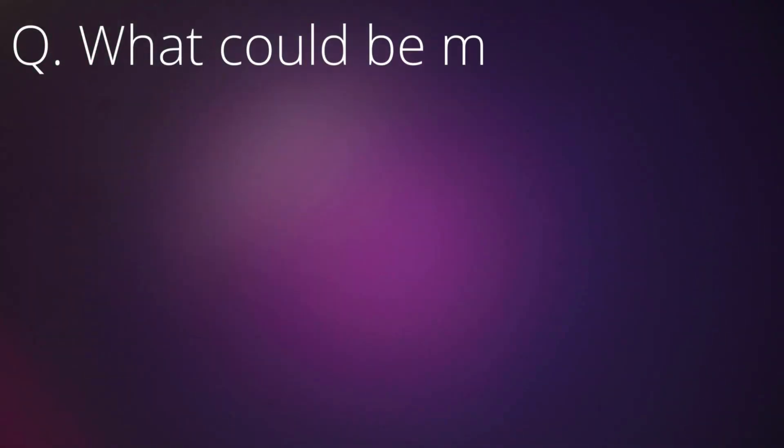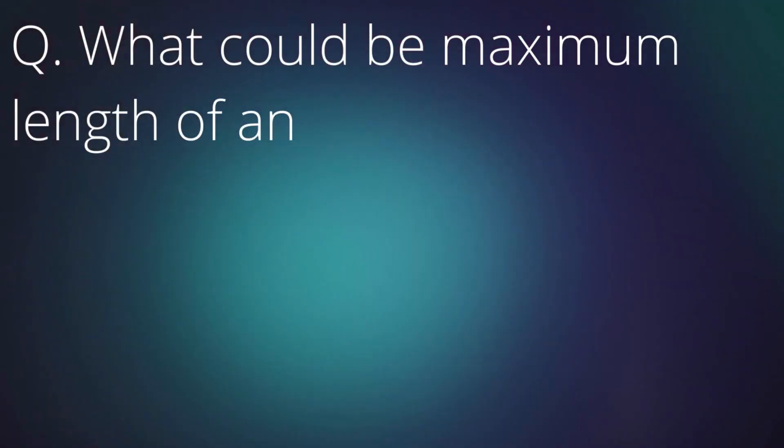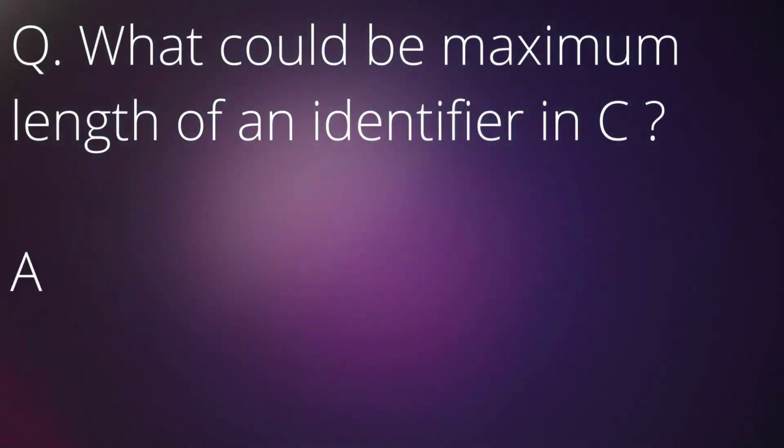Question: What could be the maximum length of an identifier in C? Answer: 32 characters.